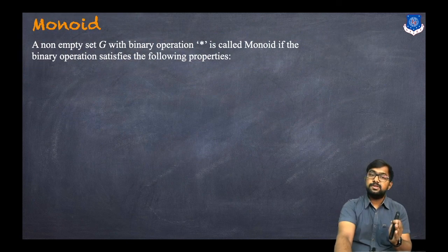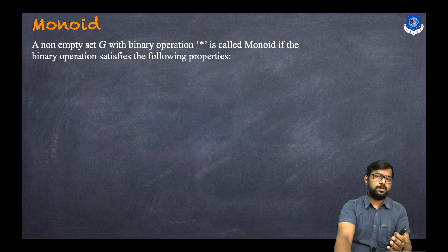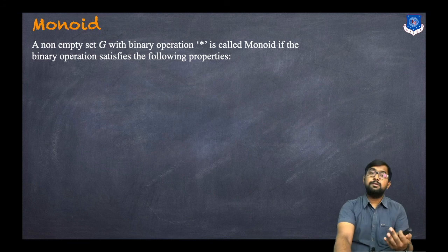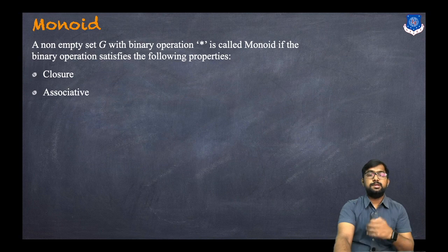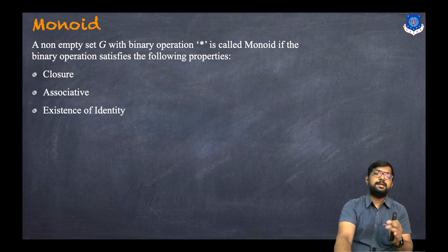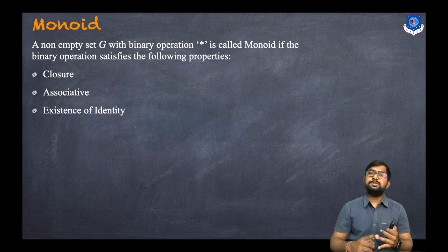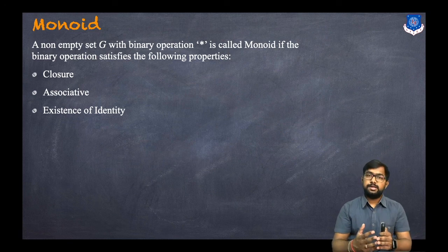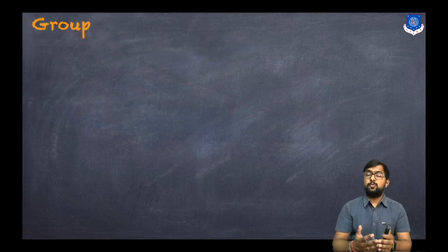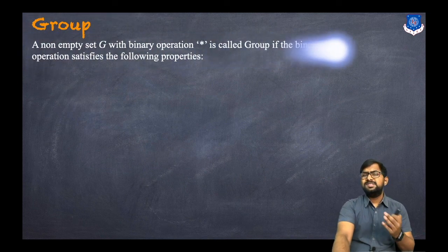If both closure and associative properties hold, the group is called a semi-group. The third one is the monoid. A non-empty set G with the binary operation star is called a monoid if the binary operation satisfies the closure property, the associative property, and additionally the existence of an identity element.